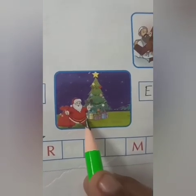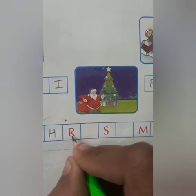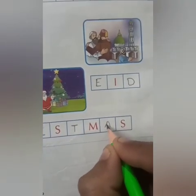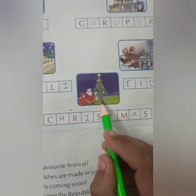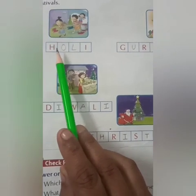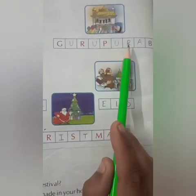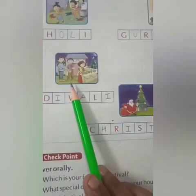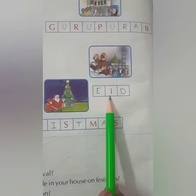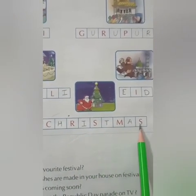Which festival is this? Yes, Christmas. So let us write it down: C-H-R-I-S-T-M-A-S, Christmas. This is the festival of Christmas. Let us revise once more: Holi — H-O-L-I. Gurpurab — G-U-R-U-P-U-R-A-B. Diwali — D-I-W-A-L-I. Eid — E-I-D. Christmas — C-H-R-I-S-T-M-A-S.